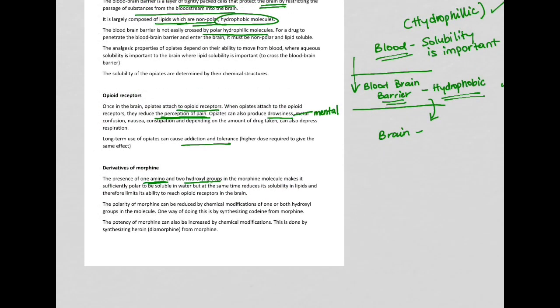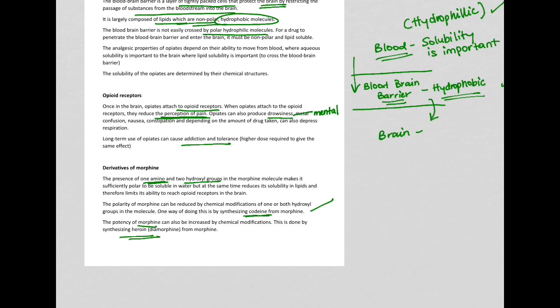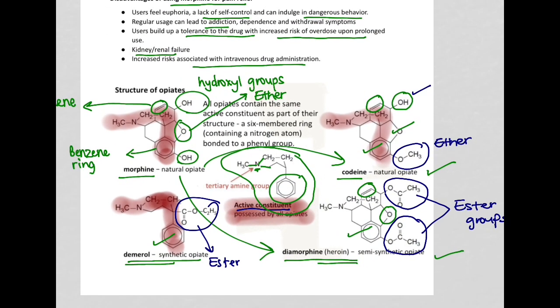From morphine, we can synthesize codeine. And from morphine, we can synthesize heroine. Codeine is 10 times less potent than morphine. Heroine is 10 times more potent than morphine. This is just because of alterations in the groups of those molecules.